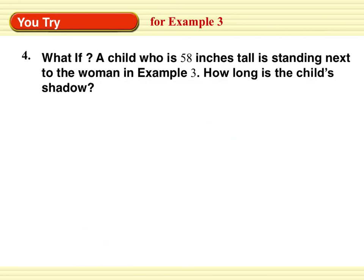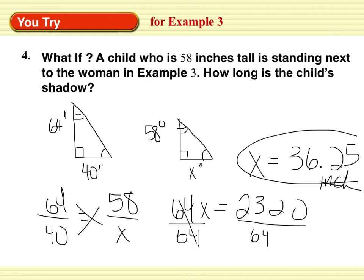You try. What if a child who is 58 inches tall is standing next to the woman in example 3? How long is the child's shadow? So we have 64 inches, 40 inches. And then we have 58 inches, x inches. You solved it. I'm pushing pause. Okay. That child's shadow is 36.25 inches long.